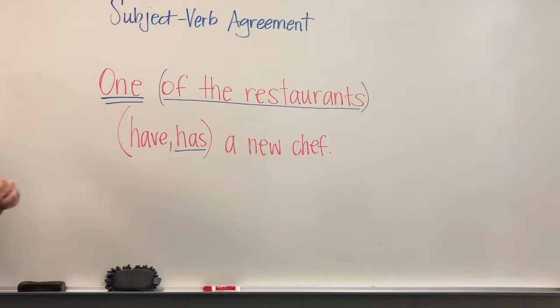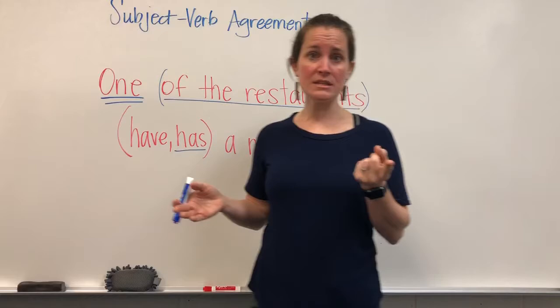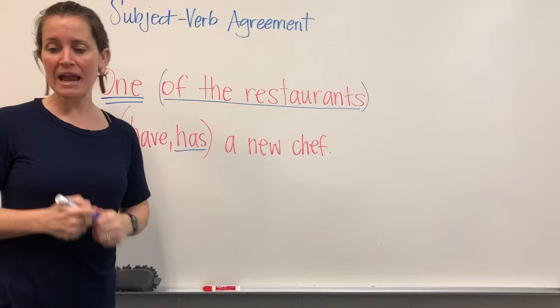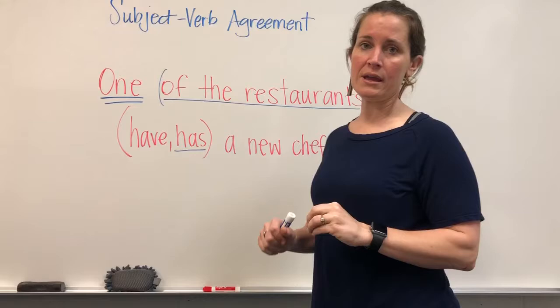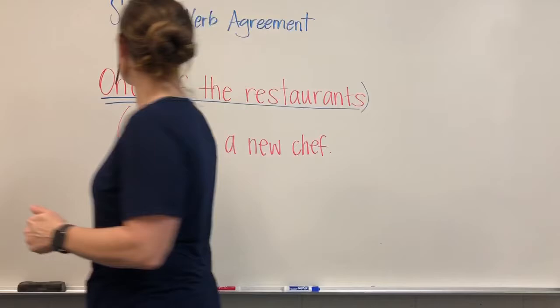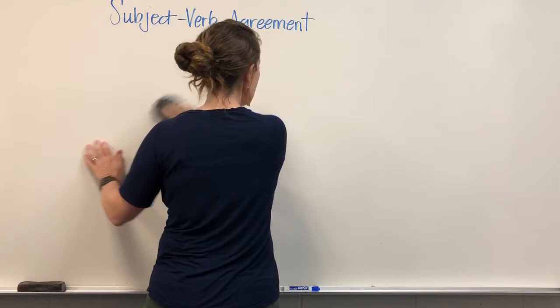Another example: 'My friends on the soccer team are hungry after practice.' 'Soccer team' is just one team — singular — but our actual subject is 'my friends.' 'On the soccer team' is the prepositional phrase. So it's 'my friends are hungry,' not 'my soccer team is hungry.' We need to find the correct subject and take out the prepositional phrase so we're not confused.